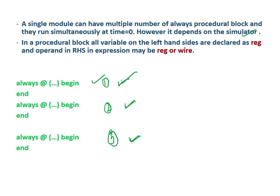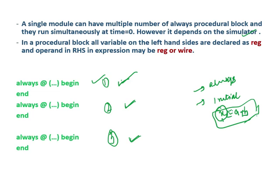There are two types of procedural blocks: always and initial. Inside a procedural block, the left-hand side — for example, in x = a + b — the signal x must always be of type reg. The right-hand side signals like a and b can be either reg or wire. So the left-hand part must always be reg, while right-hand signals can be reg or wire.